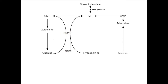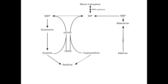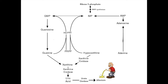However, if the body decides that the free bases need to be removed, both guanine and hypoxanthine can be converted into xanthine. When hypoxanthine gets converted into xanthine, the enzyme responsible is xanthine oxidase, or XO. XO can then react with xanthine further, turning it into uric acid, then allantoin by urate oxidase, where it can be excreted from the body.